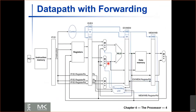We modified our data path to add multiplexers at the beginning of the execute stage that will either select data coming from the instruction decode stage, or select data forwarded from the beginning of the data memory stage, or from the write back stage. These multiplexers are controlled by signals from a forwarding unit, which decides whether to forward and from which stage by comparing the source registers RS and RT in the execute stage to the destination registers in write back and data memory, checking the RegWrite signal.